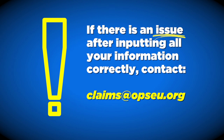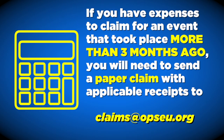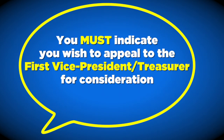If you believe all your information and documentation has been inputted correctly and there is still an issue, please contact claims@opsu.org. If you have expenses to claim for an event that took place more than three months ago, you will need to send a paper claim with applicable receipts to claims@opsu.org. You must indicate that you wish to appeal to the First Vice President Treasurer for consideration.